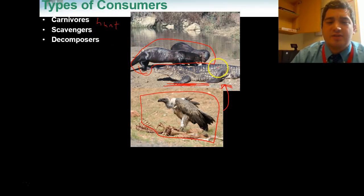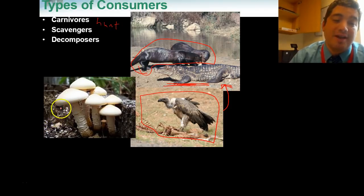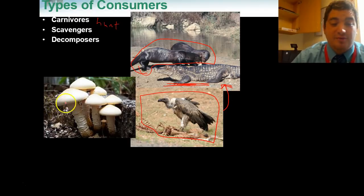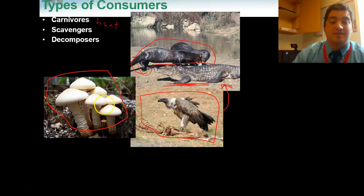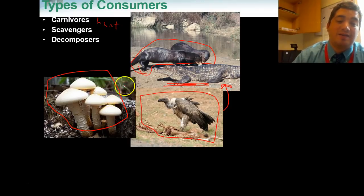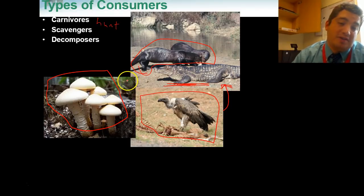The next type is decomposers. Decomposers are consumers or heterotrophs that break down things that are usually dead — other living organisms. A perfect example is a mushroom. Mushrooms are not plants; they don't do photosynthesis, but they grow on things that are breaking down and use the nutrients out of a dead animal or a dead plant to grow and to live.